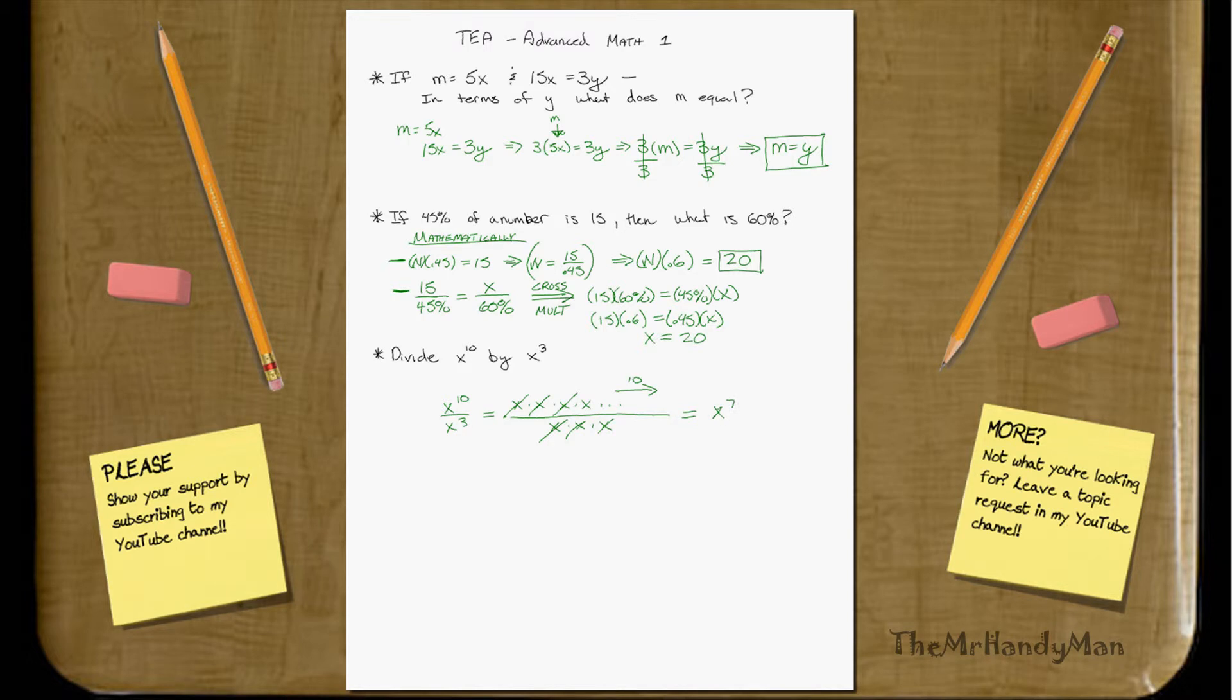A more intuitive approach is that you just, whenever you see x to the 10th over x to the 3rd, you just subtract the exponents. So therefore, 10 minus 3 equals 7. You can get x to the 7th. Very good. And I'm going to stop here and call Heather back, but yeah, I'll see you in the next video. Have a good one.